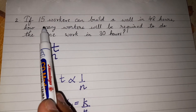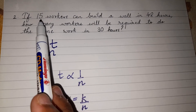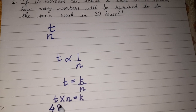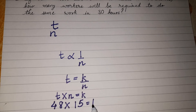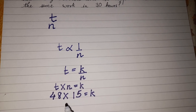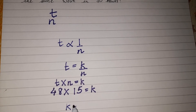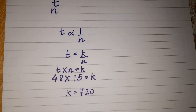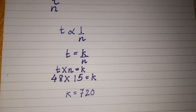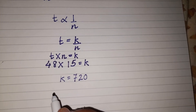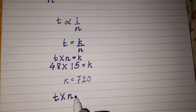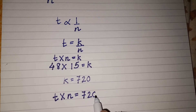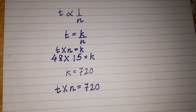From the first given data, the number of workers is 15 and the time taken is 48 hours. We put t as 48 and n as 15. Multiplying these gives 720, so k equals 720. We have found the constant of variation, and the equation of variation is t times n equals 720.